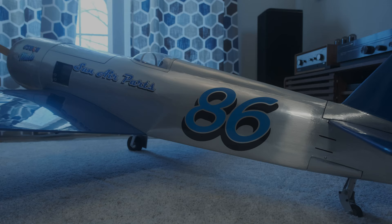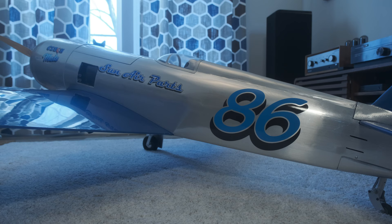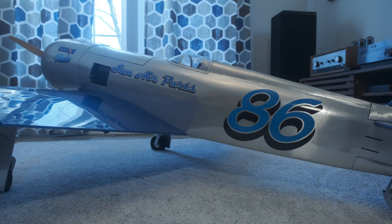Welcome to episode number two where we are finally putting together the Seagull Checkmate. In this episode we're going to be doing the ailerons, the flaps, mounting all the servos, and preparing for episode number three where we'll be installing the retracts. Let's head over to the bench and get the work started.